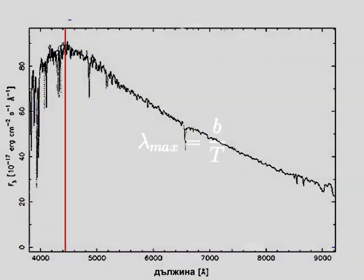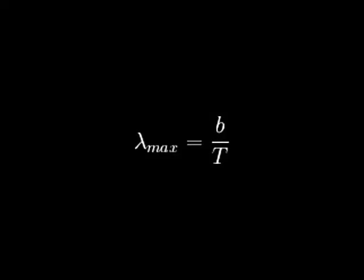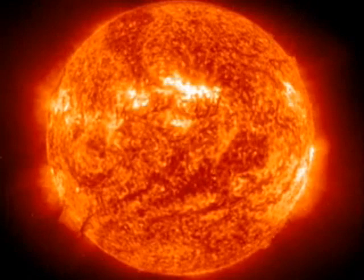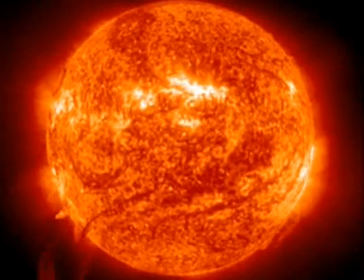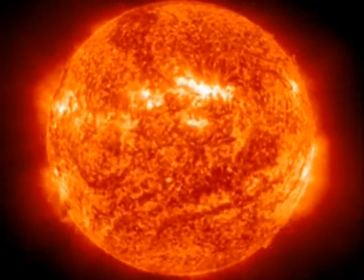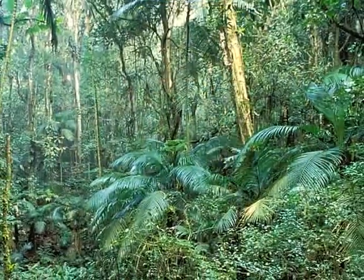We can discover the temperature of the Sun using Wien's law. Using this law, we can determine the temperature of any observable object. For example, the temperature of the Sun is about 6000 degrees because the highest intensity of sunlight is in the green part of the spectrum. This is why plants evolved to use green light on Earth.